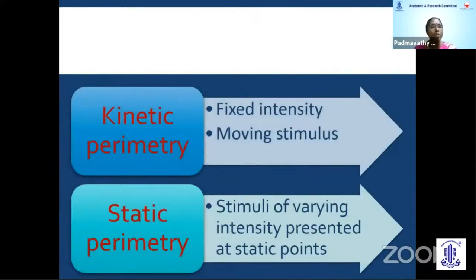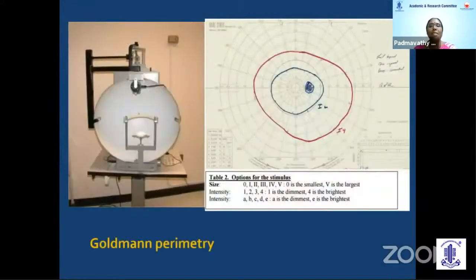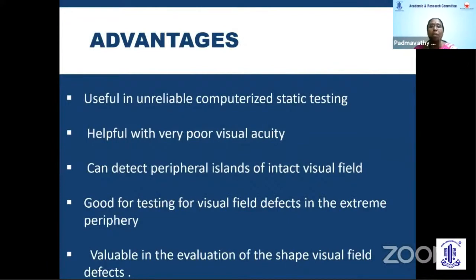There are two types of perimetry: kinetic, where you have a moving stimulus, and static, where stimuli of varying intensity are presented at fixed points. Techniques include confrontation, which is still useful for bedside diagnosis in immobile patients and can pick up at least 75% of neurological deficits. Some centers still use the Bjerrum screen for illiterate persons. The Amsler grid tests only the central 10 degrees. Goldmann perimetry is a kinetic perimetry using Roman numerals and alphabets to denote the stimuli used.